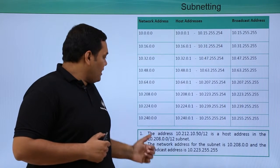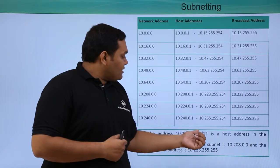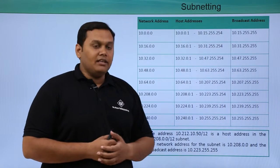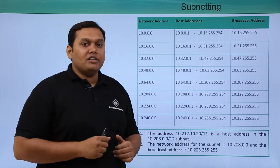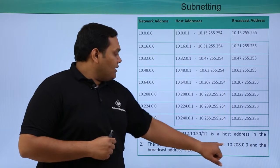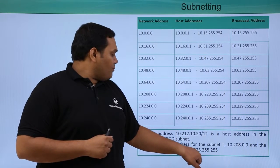You can take an example here. The address 10.12.10.50/12 is a host address in the subnet. The network address for the subnet is 10.208.0.0 and the broadcast address is 10.223.255.255.